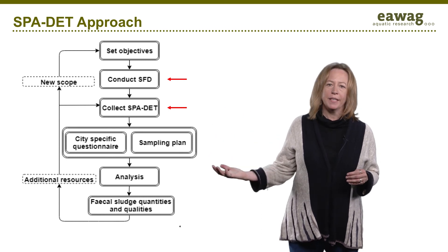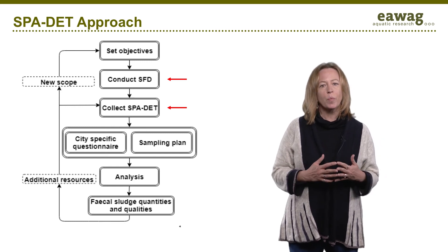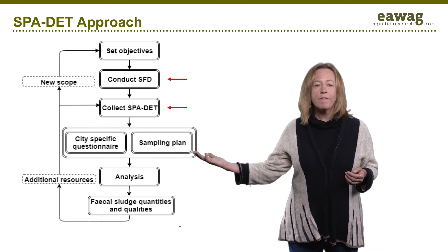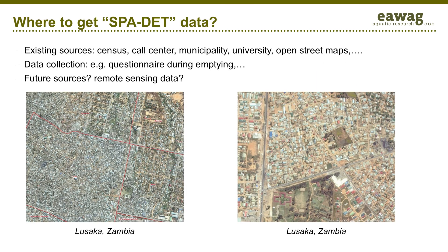The next step is to develop an SFD, because this basic level of information is required before you can make logical assumptions about the city you are working in. Then you need to collect all available and relevant types of SPOT-Ed data and consider what you will need to collect yourself. Sources include existing data such as census, municipality, research institutions, or open street maps, as well as household questionnaires and emptying service providers. We are also researching algorithms that can map out DET data for cities based on spatial patterns in satellite images — for example, pit latrines in an informal settlement.